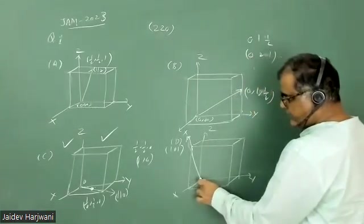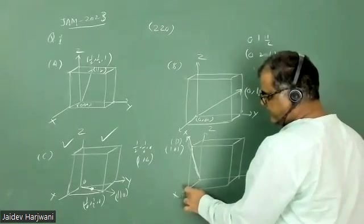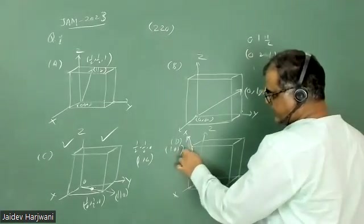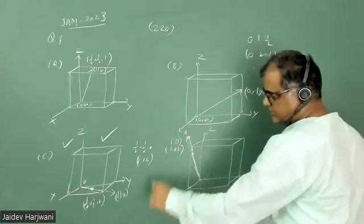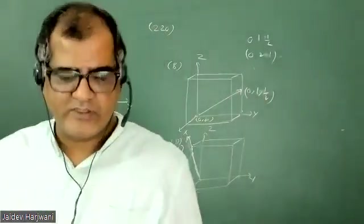If you calculate this one, this direction—you need to go x at one, y and z at one—so this is [1,0,1] direction. So option C is the correct answer for this question. Thank you very much.